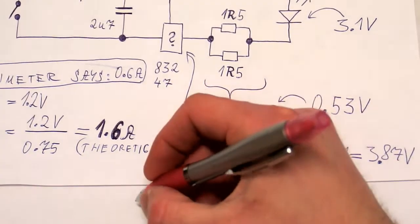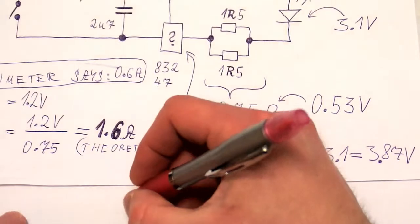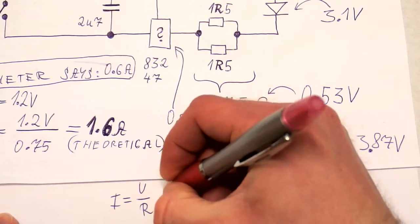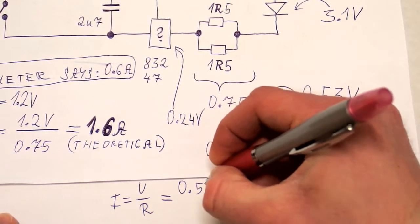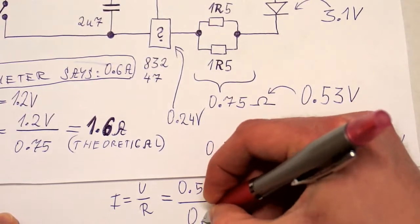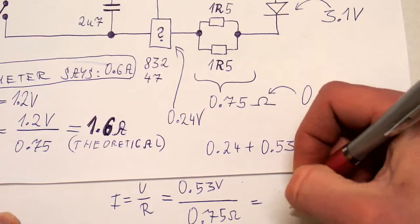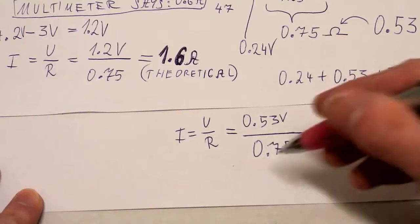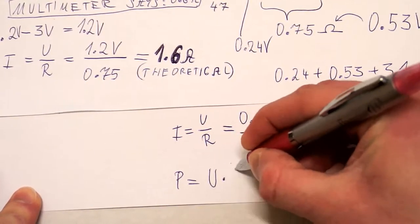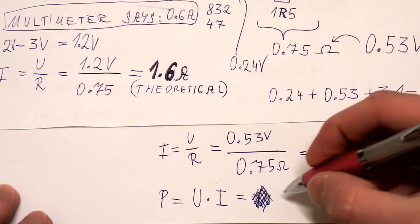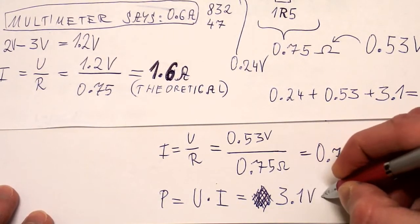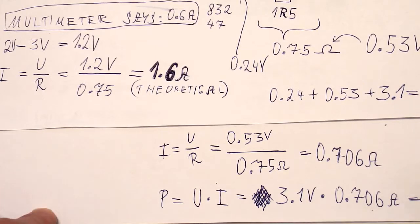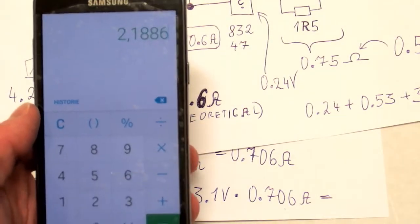And now we know the voltage on the resistor and the resistor value, so we can calculate the current. I equals U over R. And it is 0.53 volts divided by 0.75 ohms. And the power is U times I. Here we have the voltage of the LED: 3.1 volts times the current, this is 0.76 amps. And we get about 2.19 watts.